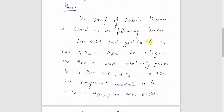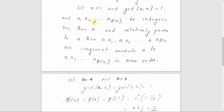For the proof, let n be greater than 1 and gcd(a, n) equal to 1, so n is a positive number. We identify a1, a2, ..., a_φ(n) as the integers less than n and relatively prime to n. We are identifying these φ(n) numbers.